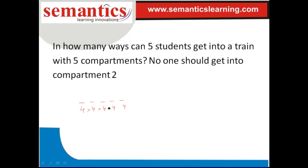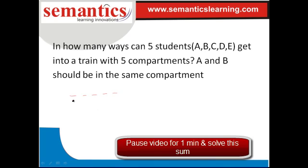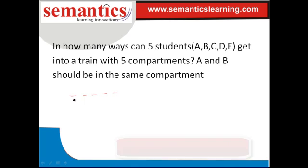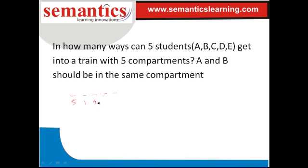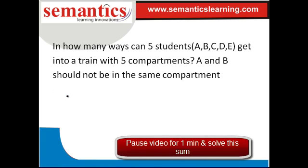Next variation: A and B must be in the same compartment. Put five dashes. The first person A can go in five ways. B must go into the same compartment as A, so B has only one way. There are two sub-cases: if no one else shares compartments, the third, fourth, and fifth students get four, three, and two ways respectively. If everyone can share, it would be five into one into five into five into five.